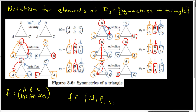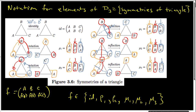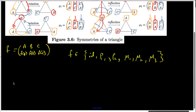It could be the identity permutation, it could be rho one, it could be rho two, it could be the first reflection which the author calls mu one, the second reflection which the author calls mu two, and the third reflection which the author calls mu three. This P-looking thing is officially called rho, and it is the Greek R. This funny-looking M that has a tail at the beginning is named mu, and that is indeed the Greek M. Finally, you should realize that we can compose these permutations, and we'll look at that in more detail in the next video.